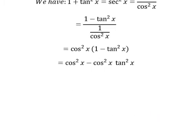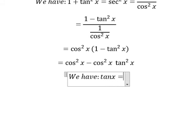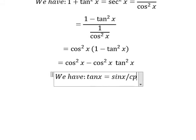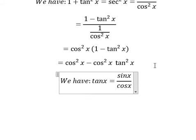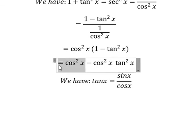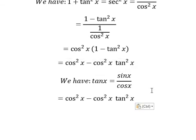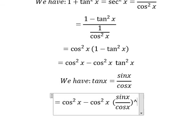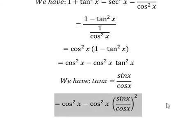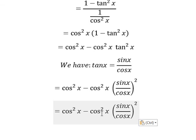We have the formula: tan x equals sine x over cosine x. So we change tan x using this formula. Cosine squared x, cosine squared x—we simplify.